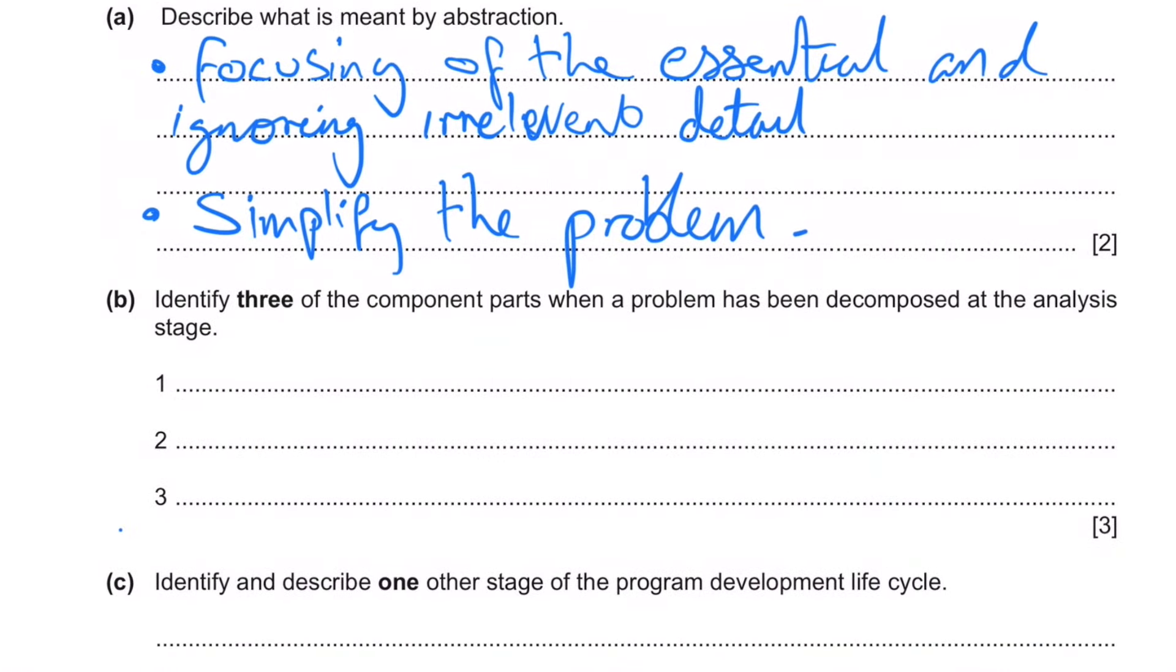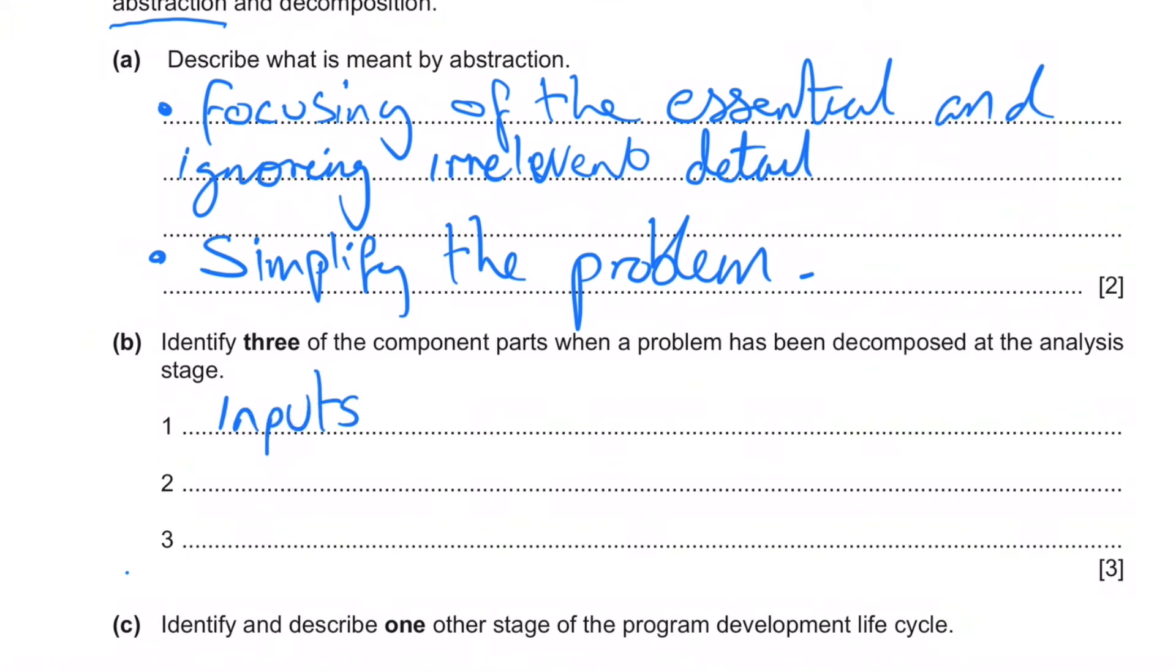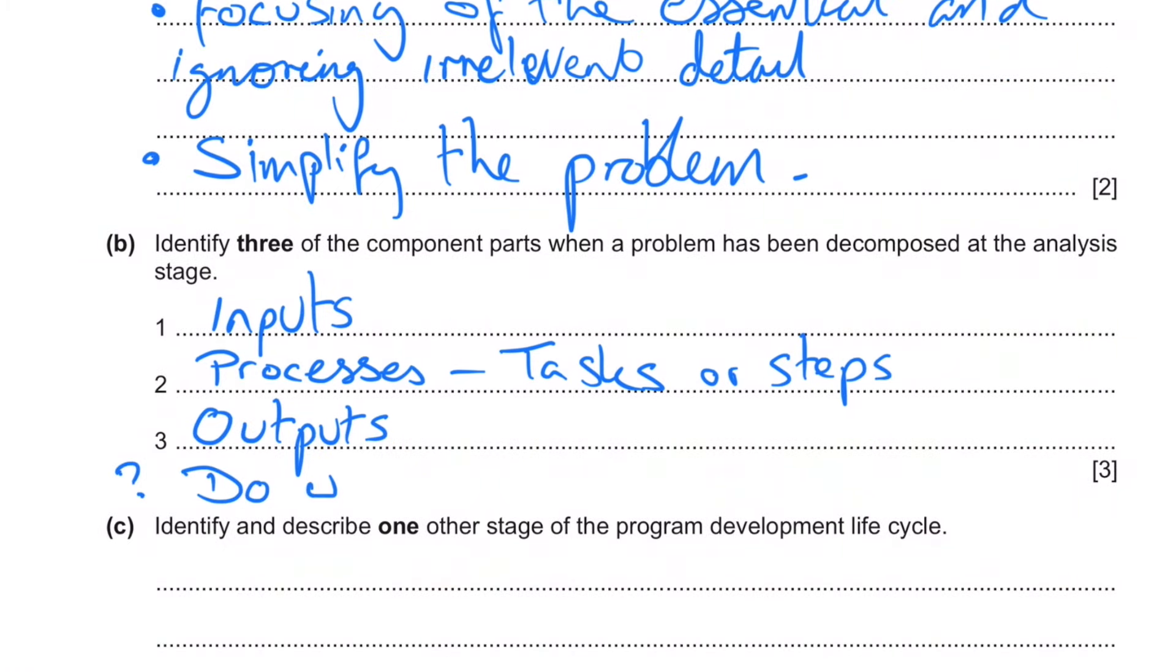Identify three of the component parts when a problem has been decomposed at the analysis stage. We need to know what are the inputs - what data is going to be coming into the program, what we're going to do with that data, either processes or tasks, and then outputs. What are we able to get from the program once we've received the data. Do we need to store any data? Storage.